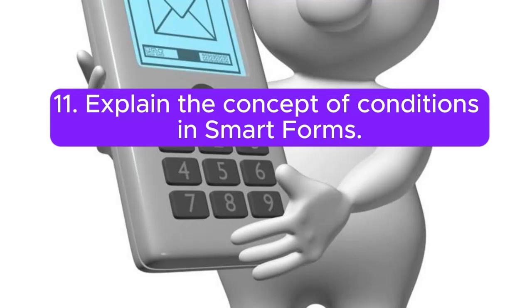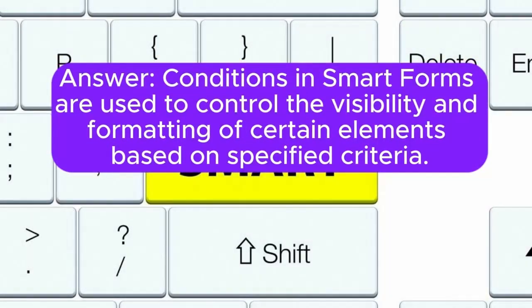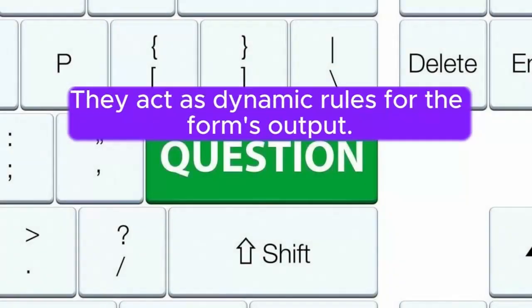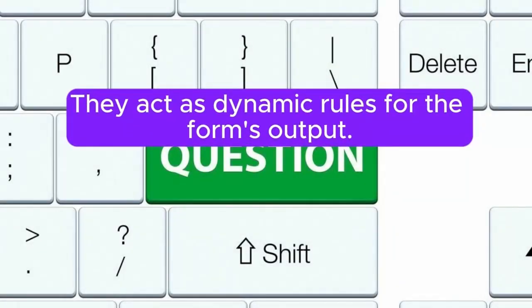11. Explain the concept of conditions in SmartForms. Answer: Conditions in SmartForms are used to control the visibility and formatting of certain elements based on specified criteria. They act as dynamic rules for the form's output.